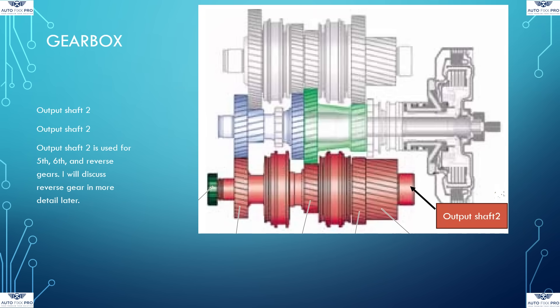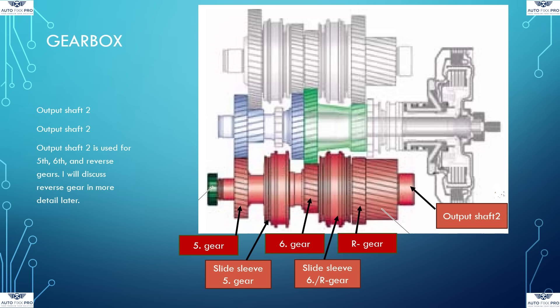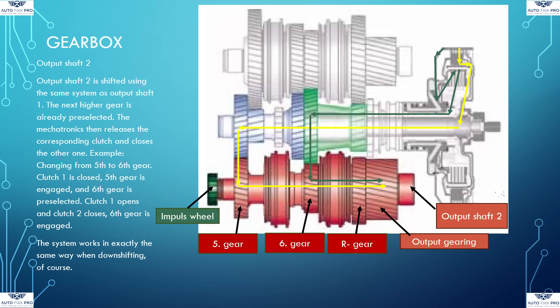Output shaft 2 carries the gear wheels for 5th, 6th, and reverse gears. It also carries the sliding sleeve for 5th gear and the sliding sleeve for 6th gear and reverse gear. There is another output gear on output shaft 2 which is connected to the ring gear of the differential. A pulse generator wheel is installed to detect the transmission output speed. The same preselection principle applies: for the change from 5th to 6th gear, clutch 1 is closed and 5th gear is engaged; 6th gear is preselected by the mechatronics; clutch 1 opens and clutch 2 closes — 6th gear is engaged. The system works the same way when downshifting. The power curve for 5th gear is shown in yellow and for 6th gear in green.